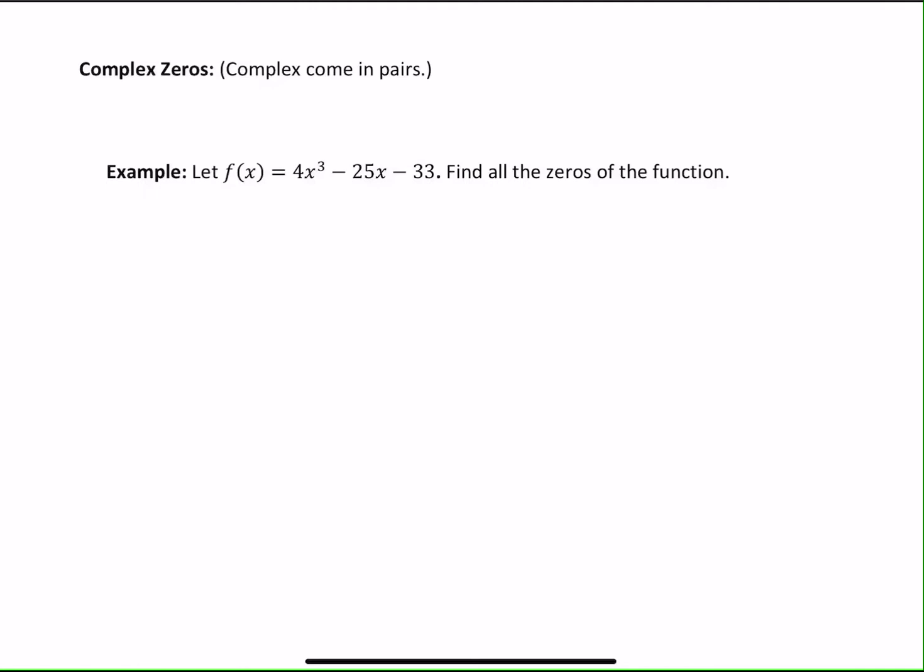When we talk about complex zeros of a function, complex zeros always come in pairs. So if a plus bi is a zero or solution, then its conjugate, a minus bi, is also a zero. And that is always going to be true, and it will always be the conjugate.